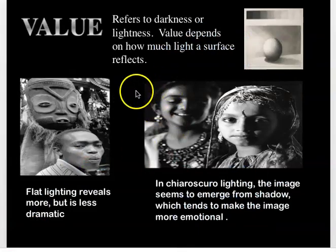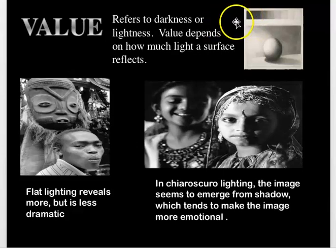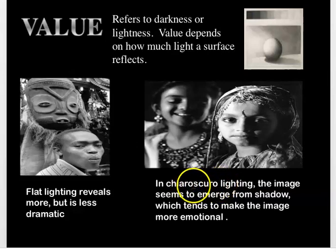Now we're going to talk about the element of value. Value is lightness and darkness. In a drawing class you work with value using a pencil or charcoal — lights and darks. In painting, you can mix black and white paint to create values. Lights and darks can make things look more three-dimensional. The Italian term is chiaroscuro — chiaro means light, and scuro means dark.